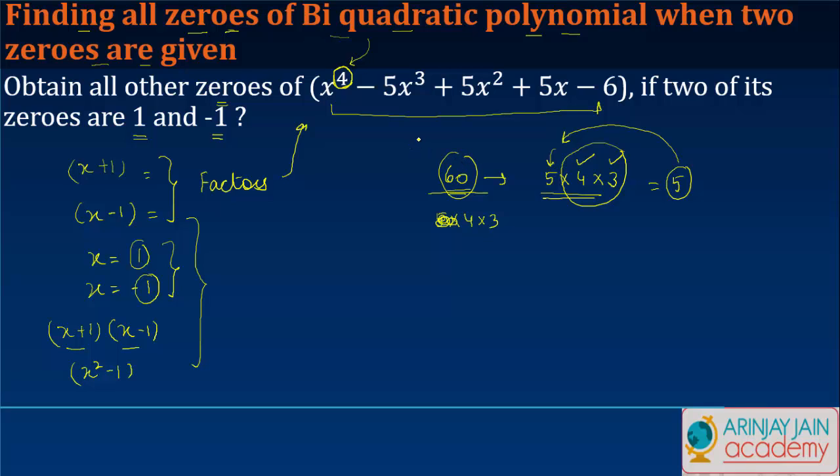Same thing I am trying to apply here. I know the polynomial and that (x + 1) and (x - 1) are two factors. So first I am dividing this by x^2 - 1 to see what are the remaining factors or polynomials available.